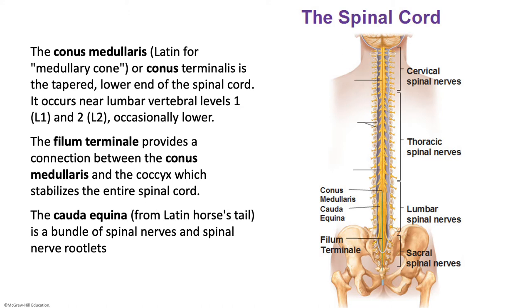We'll get started with the spinal cord — this is what we didn't get to yet. You only need to learn the terms in the green boxes in your lab book. As we're looking at the spinal cord, the conus medullaris is the tapered lower end of the spinal cord — it's the end of the spinal cord — and it usually ends around L1 or L2.